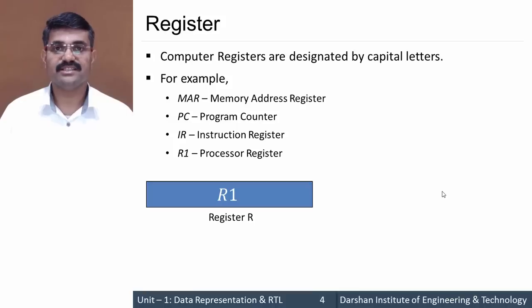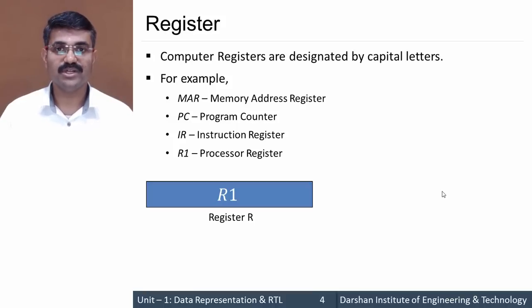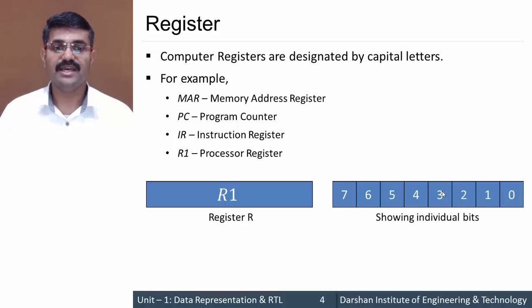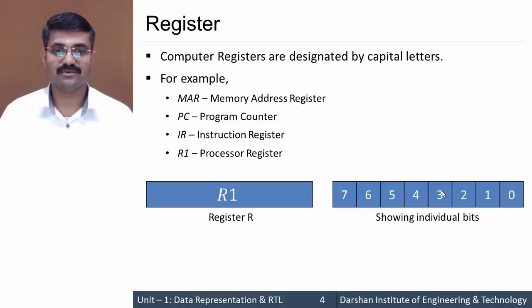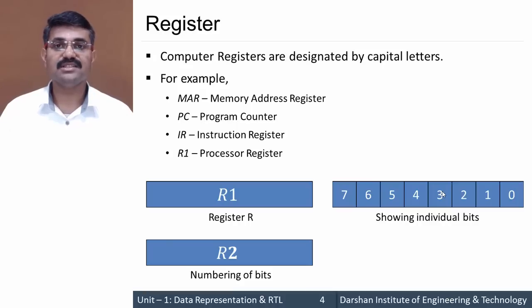A register can be viewed as a whole, but it can also be divided into individual bits or various parts. For example, this is an 8-bit register with bits numbered from right to left, 0 to 7, showing each bit of the register.